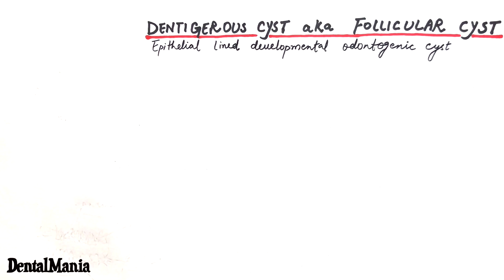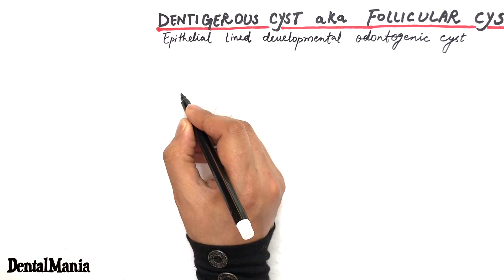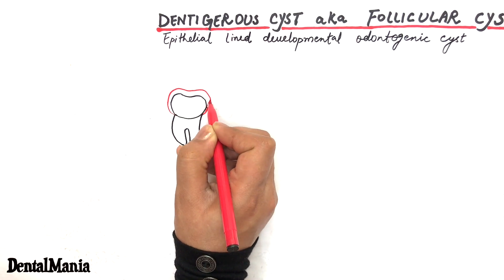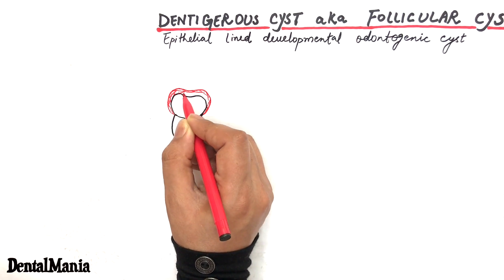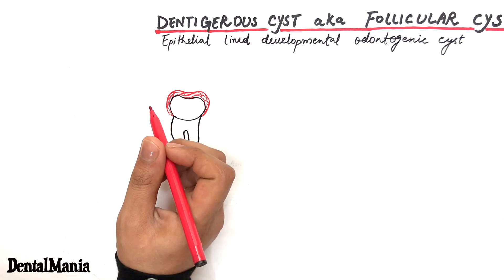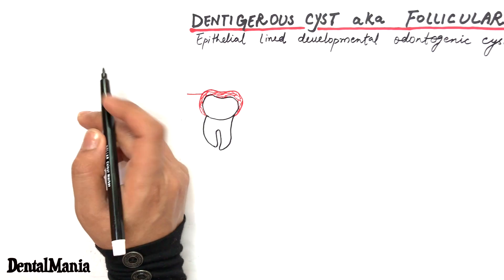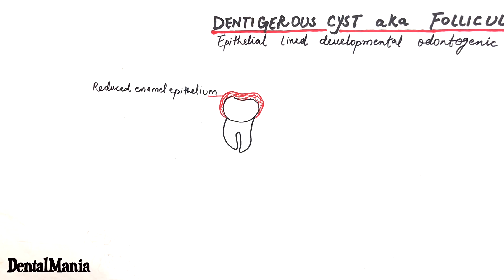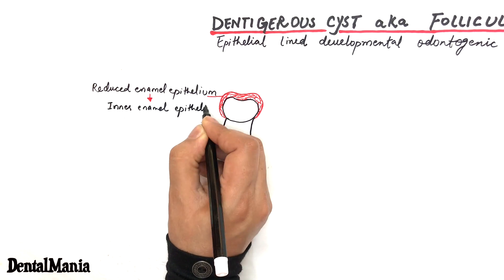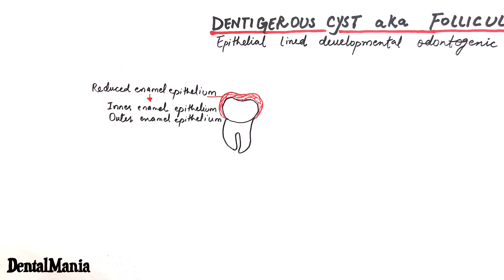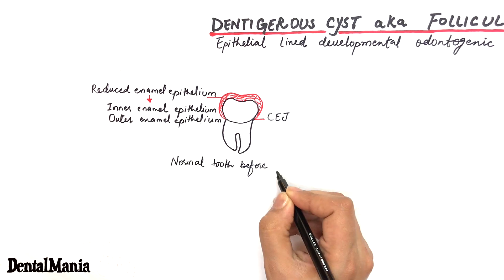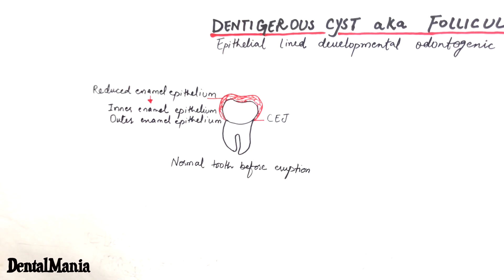The epithelial lining of odontogenic cysts is derived from epithelium produced during tooth development. In odontogenesis, after fully mature enamel is formed and before a tooth erupts into the oral cavity, the tooth crown is lined by reduced enamel epithelium. This reduced enamel epithelium consists of inner and outer enamel epithelium and covers the crown to the cementoenamel junction, protecting the enamel until the tooth erupts.